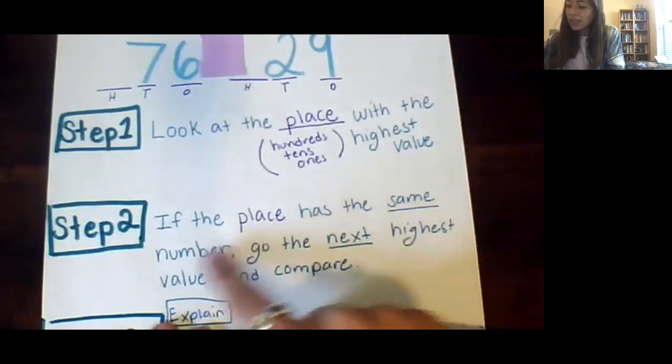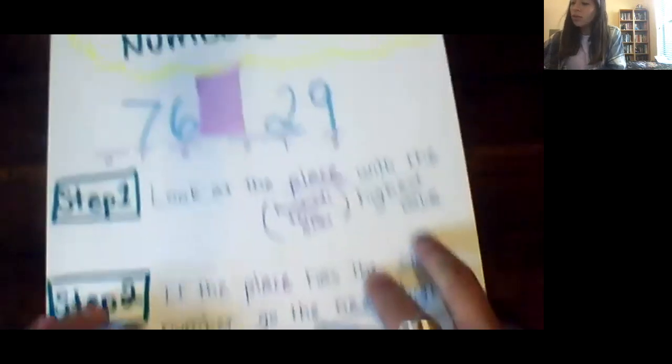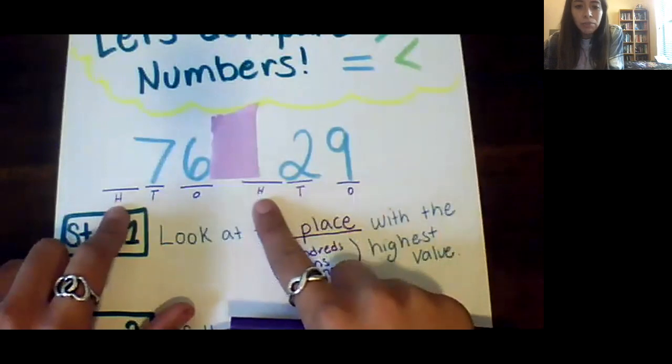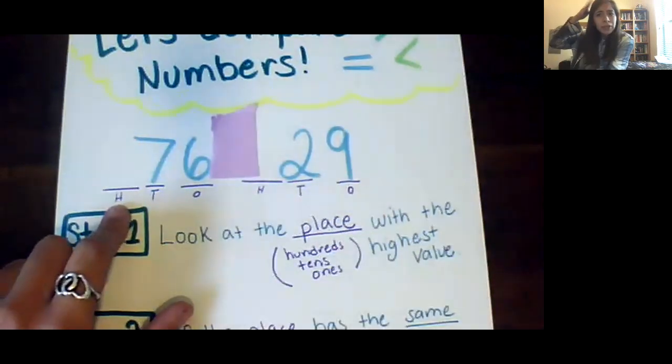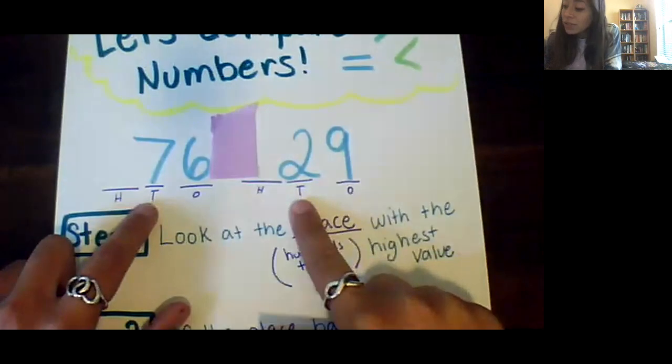If the place has the same number go to the next highest value and compare. Well they're both invisible zeros so let's move to the next highest value. Which would it be? My tens or my ones? If you said tens, awesome job. Pat your brain for being so smart. We're going to hop over to our tens place.